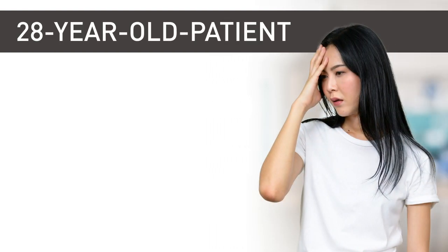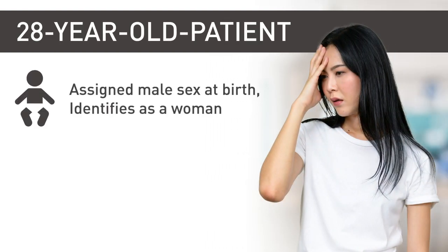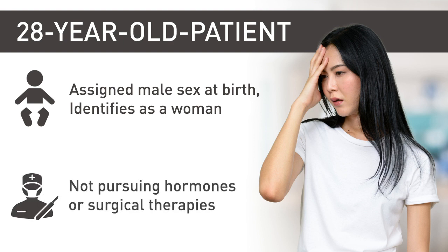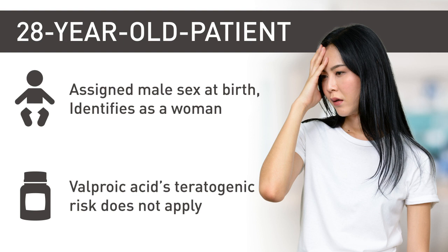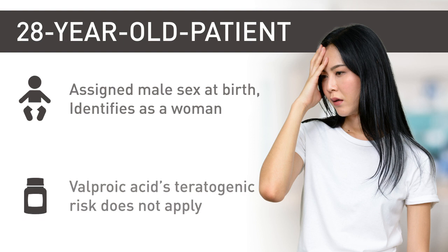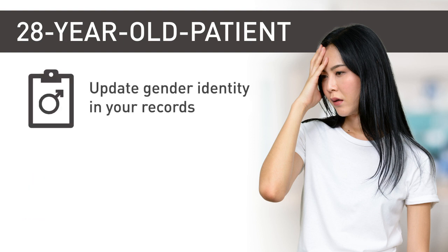Returning to our case, you learn that Reese's pronouns are she and her. She confirms that she was assigned male sex at birth but identifies as a woman. Reese is not pursuing gender affirmation steps such as hormones or surgical therapies. You both agree that valproic acid's teratogenic risk does not apply to her, although she is a woman of childbearing age. You also review the possible androgenic effects of valproic acid, and you update the chart indicating her gender identity.